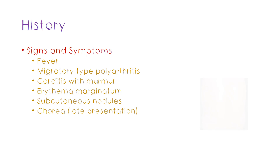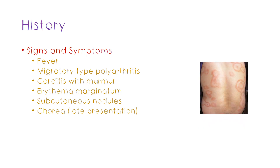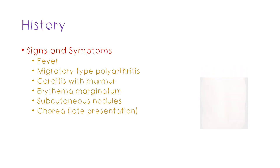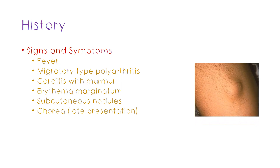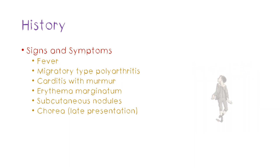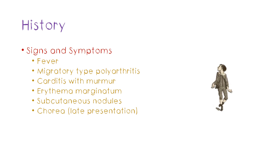The next sign you could see is a rash called erythema marginatum, which is fairly unique for rheumatic carditis, and subcutaneous nodules. The next feature is chorea, which are dance-like movements of the limbs. This is actually a late presentation and you'll get it around two to six months after the acute episode.